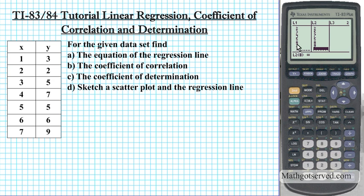Just go over your entry to make sure that it lines up correctly: 5, 5, 4, 7, 3, 5, 2, 2 — go up — 1, 3. Everything lines up perfectly.